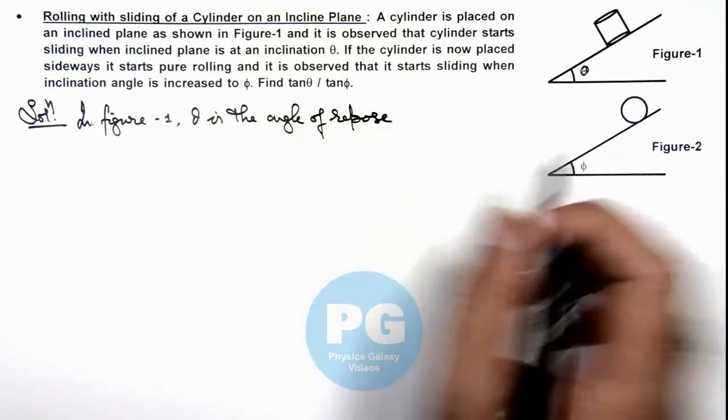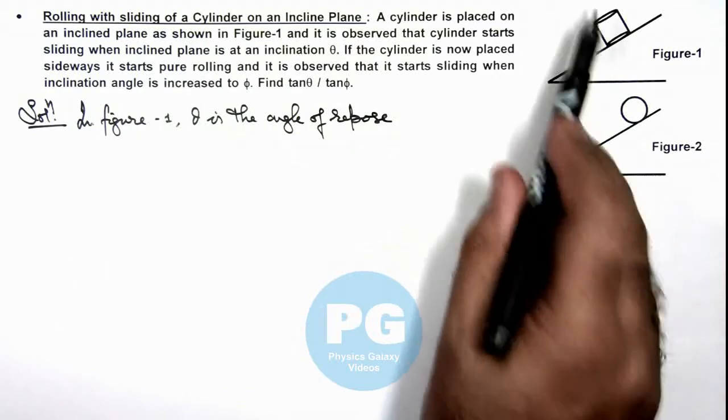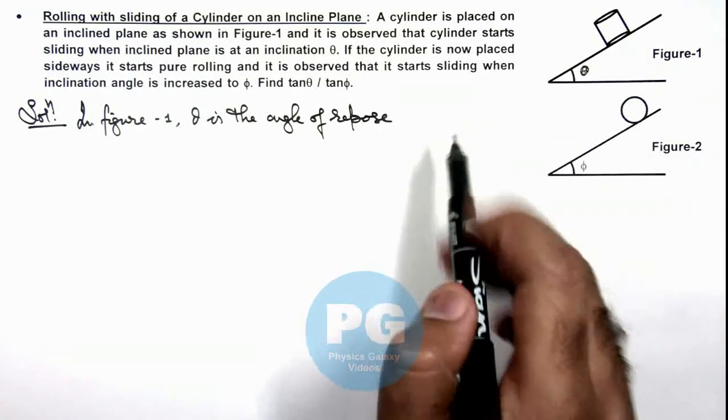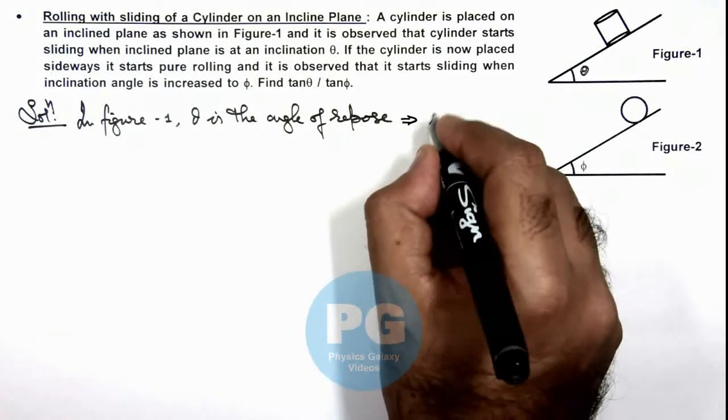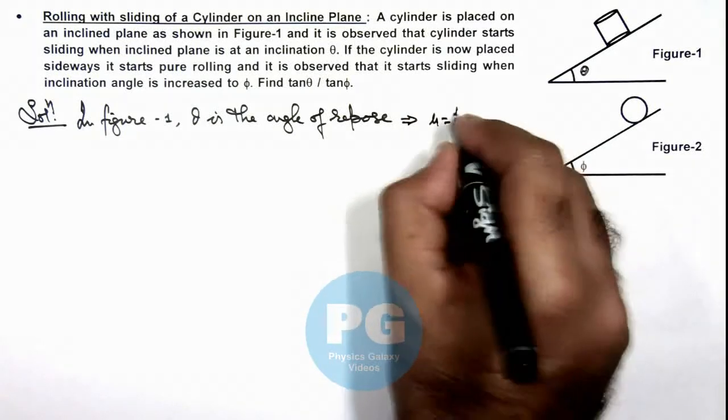At which on incline when we place a body, it starts sliding. So in this case we can write the value of friction coefficient is equal to tan theta.